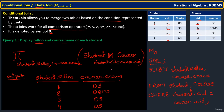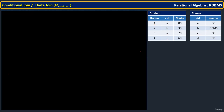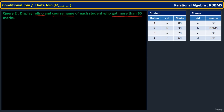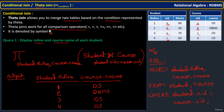Now let us take one more example with a little more complexity: display the roll numbers and course names of each student who got more than 65 marks. One extra condition is added. First, take both tables — Student joined with Course. The first condition is to match course IDs: student.c_id = course.c_id. After that, using the AND operator, marks must be greater than 65.